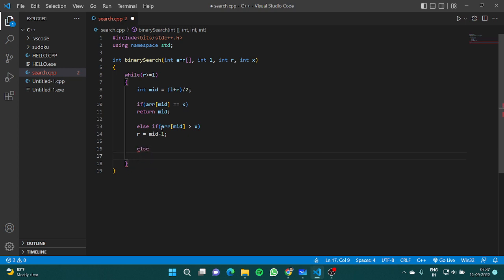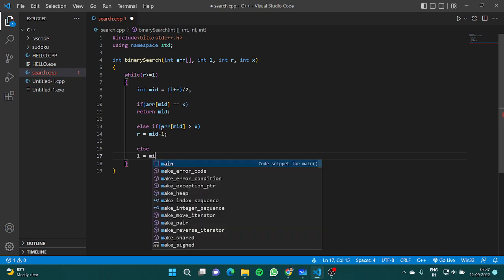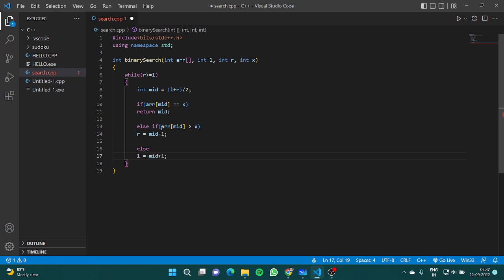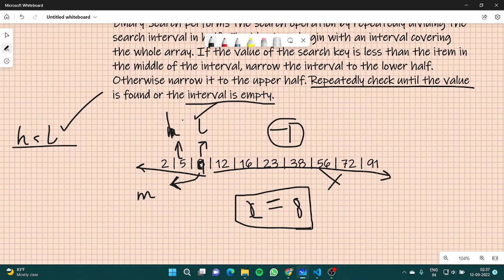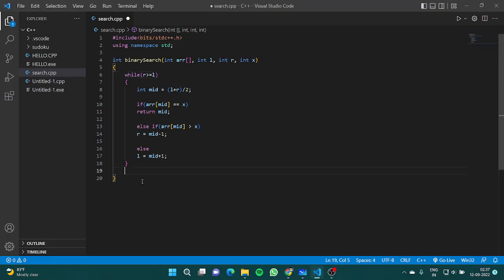Now the only condition left here is that array mid should be less than X. If array mid is less than X, then I would not be finding the element on the left side of the array. I would be finding the element towards the right side of the array only. So I'll put L as mid plus 1. And when this condition gets dissatisfied, when my R becomes less than L, the element will come out of the loop. That means the element is not there in our array. So I'll simply return minus 1 here. So this is the standard code of a binary search. I hope you understood how the code works.